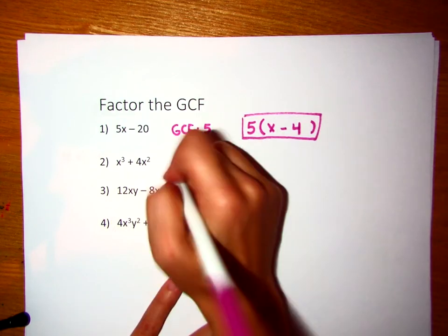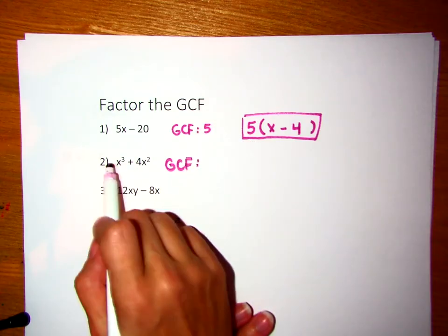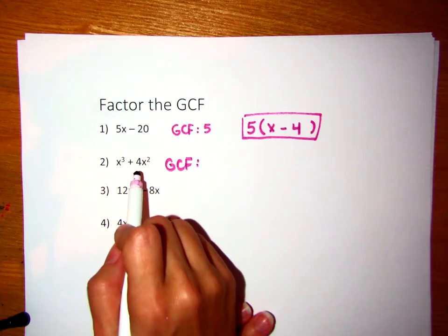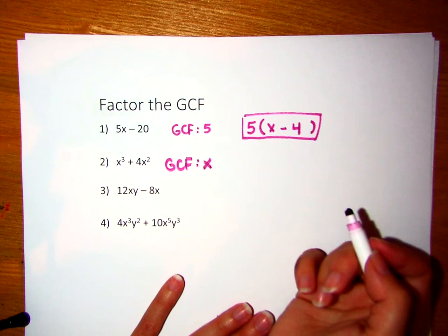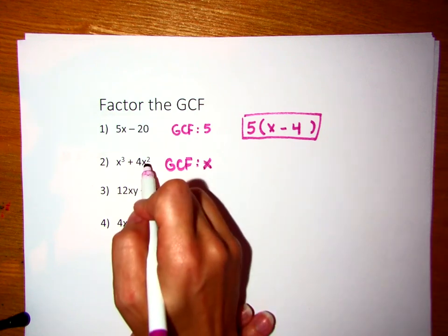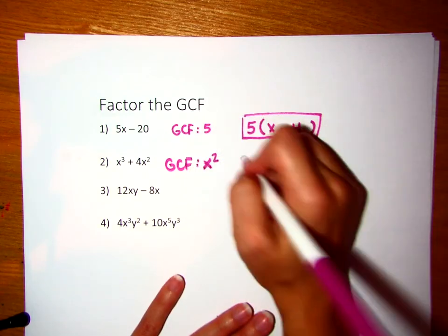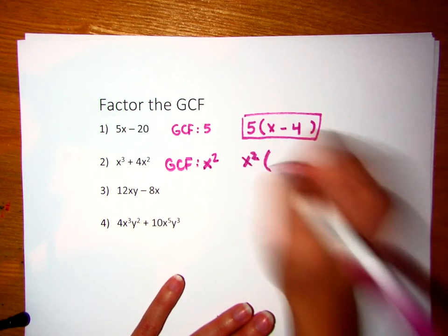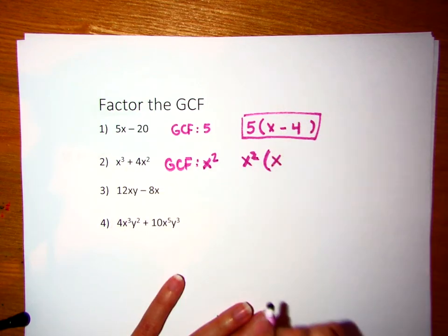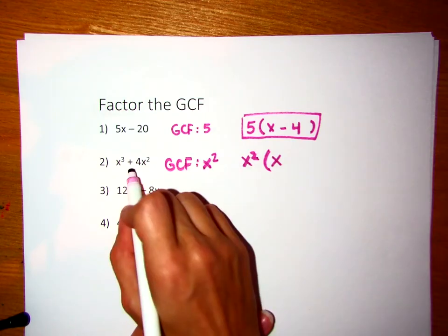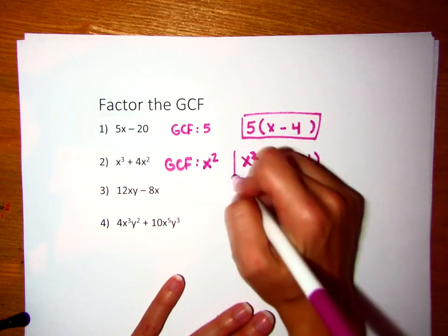If you look at this one, we're trying to find our GCF. There's an invisible one here and a 4, so we're not dividing a number out. But they both have x's. The highest amount of x's that you can take out is actually the smallest exponent, which in this case would be x squared. So that's my GCF. x squared times what gives me x cubed? x squared times x. x squared times what gives me 4x squared? x squared times 4. Now we've pulled that GCF out.